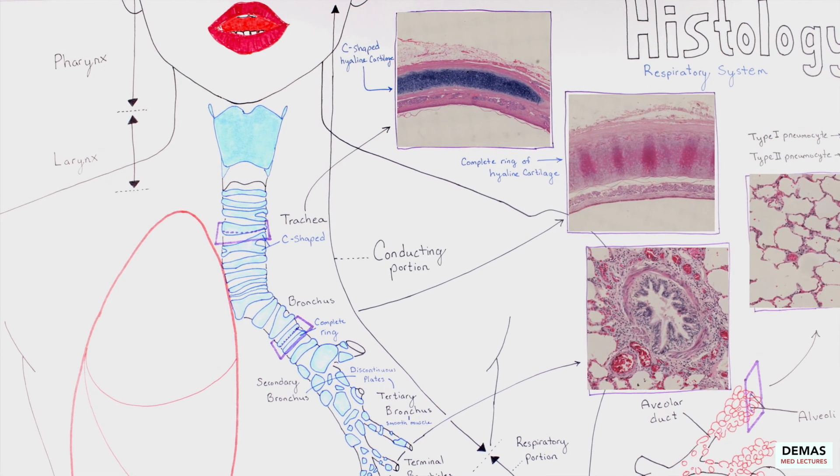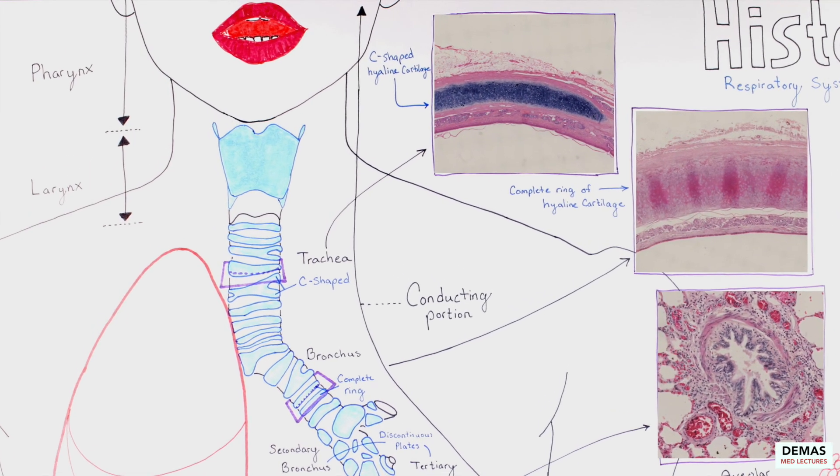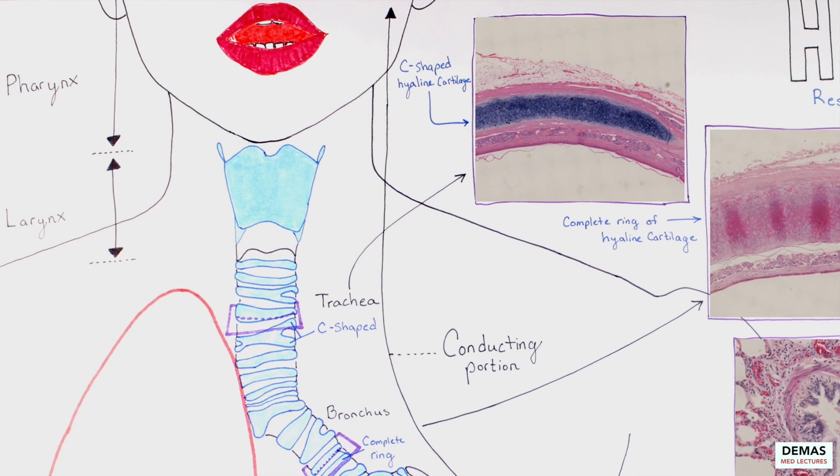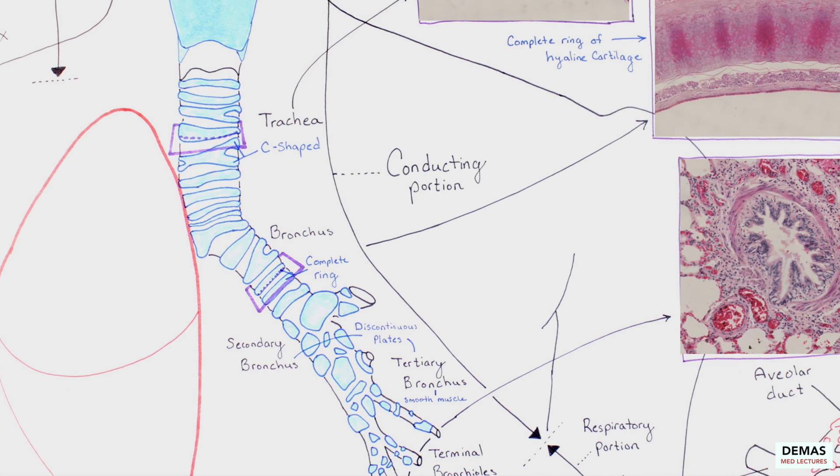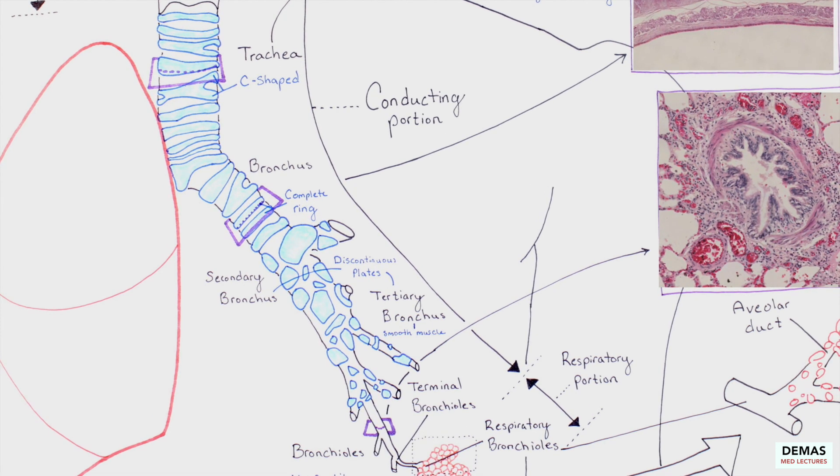Within the conducting division, remember how the trachea is the largest airway with C-shaped cartilaginous rings, while the primary bronchi contains full rings of cartilage and the secondary and tertiary bronchi have irregular plates of cartilage. Remember that the bronchioles do not contain cartilage, but rather have a prominent layer of smooth muscle for support.